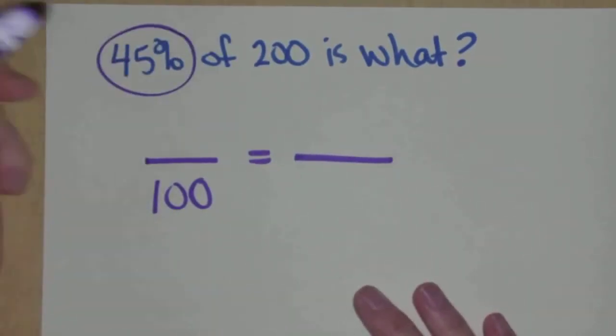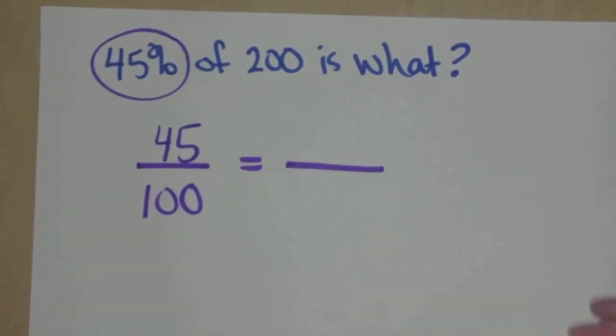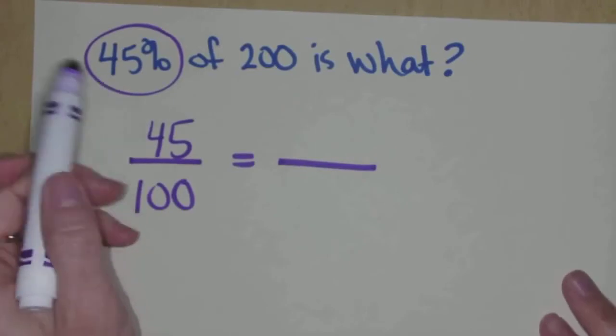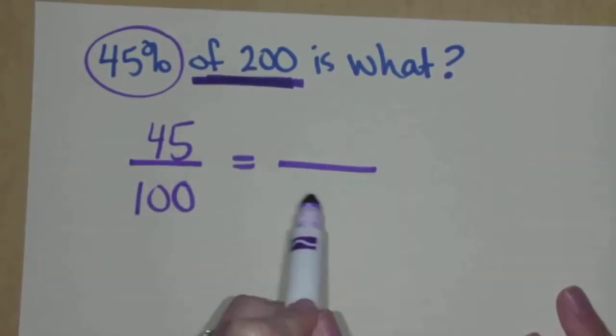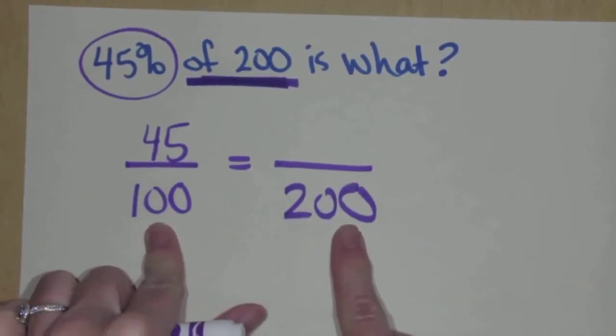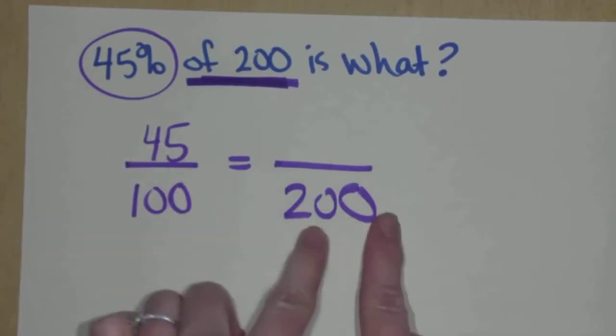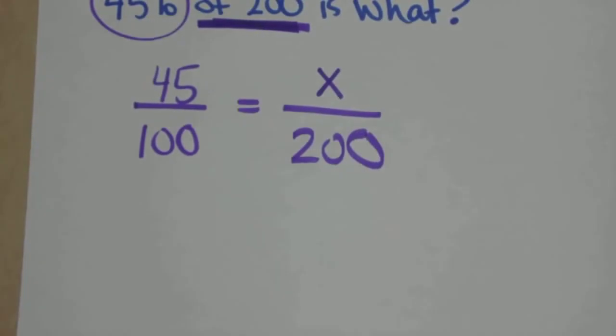One's for the other number in the problem. And then one is for the X or the unknown. We're given the percent. The percent always goes above 100. So 45 over 100. 45% of 200, out of 200, that makes me think the 200 is like 100% of this. It's like the original amount. 45% out of 200 is what?